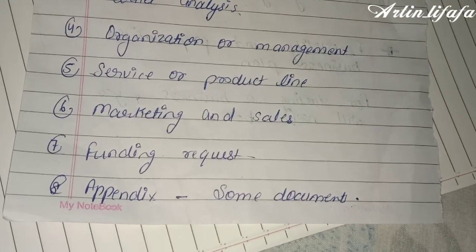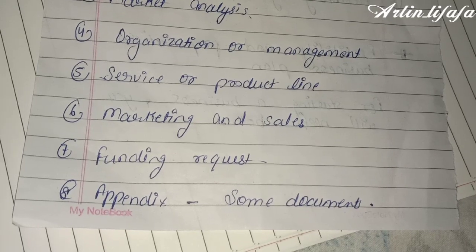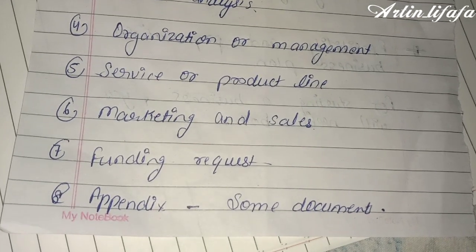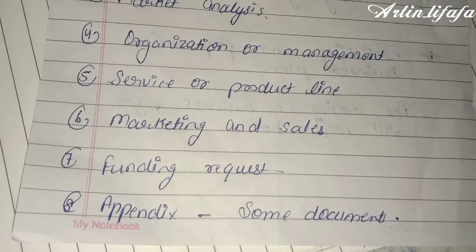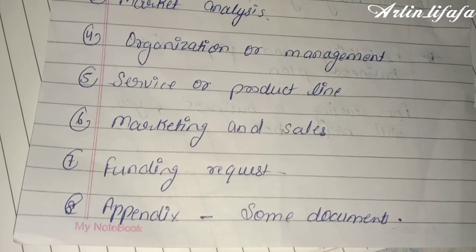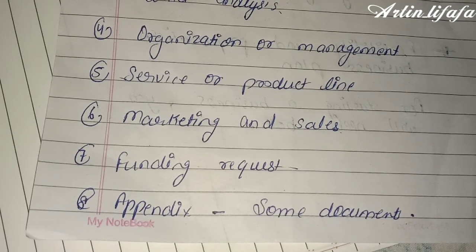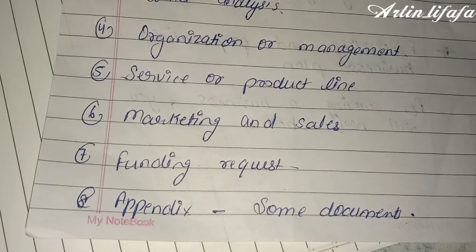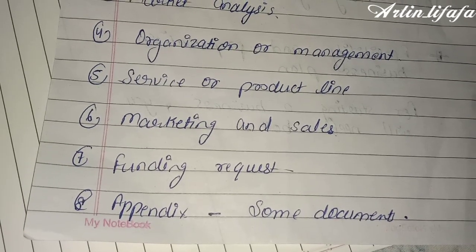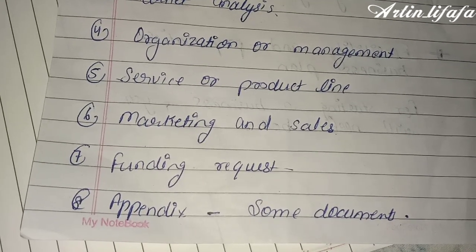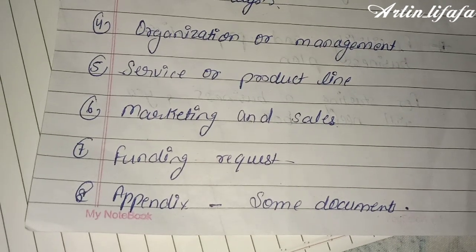The business plan also includes marketing and sales strategy, a funding request if the business needs external funding, and finally an appendix containing important documents such as licenses and other required documents.